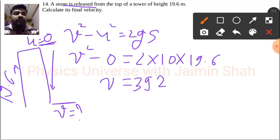So that is our v square. So if we want to find v we need to find under root of 392.